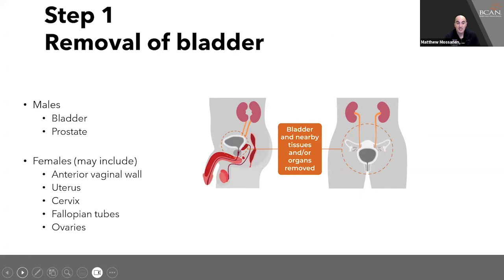This summary slide covers the key takeaway: a cystectomy involves removal of the bladder, but also nearby tissue and organs. For men, this includes the bladder and the prostate. For females, this can include the anterior vaginal wall, the uterus, the cervix, the fallopian tubes, and the ovaries.